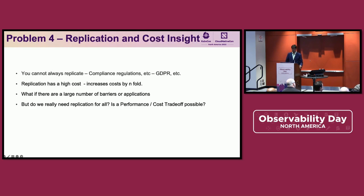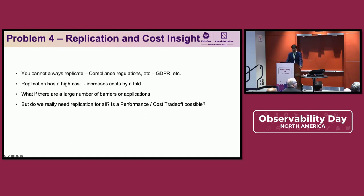However, replication isn't always possible — compliance regulations may prevent running replicas in certain regions, and replication has significant additional cost with n-fold increases in running expenses. If you have many network barriers or a large number of applications, the number of replicas grows exponentially. Do we really need replicas for everything? What if you could trade off a little performance for significant cost gains, and find the performance loss isn't even observable in real usage?